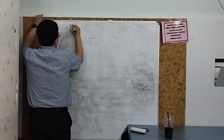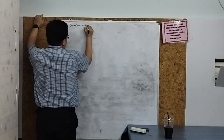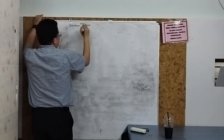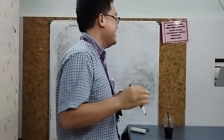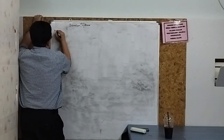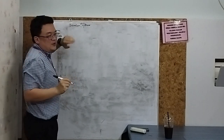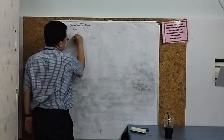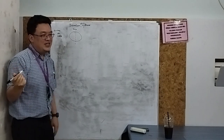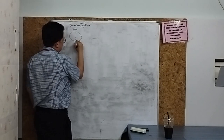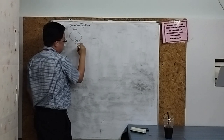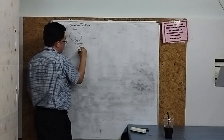Now let's move to brainstem stroke syndromes. To understand these, you must understand brainstem anatomy. You don't need to know everything — just enough. The brainstem has three parts: midbrain, pons, and medulla. Because it's roughly symmetric, you only need to know half. At the front of the midbrain is the cerebral peduncle — if affected, it gives contralateral hemiparesis.